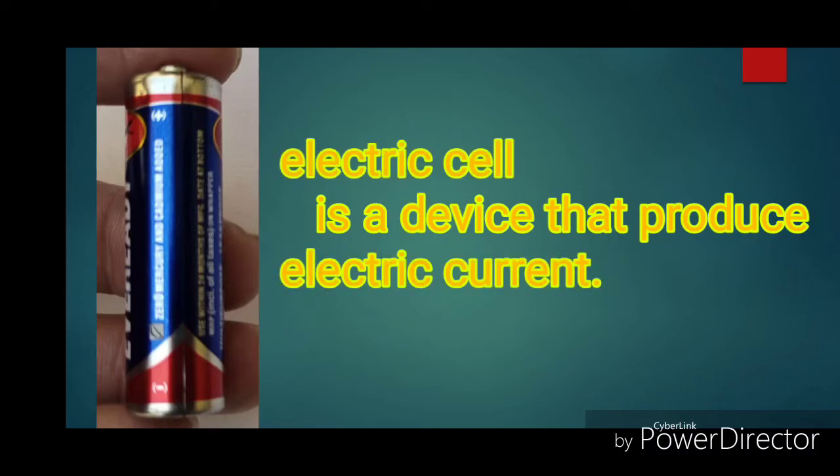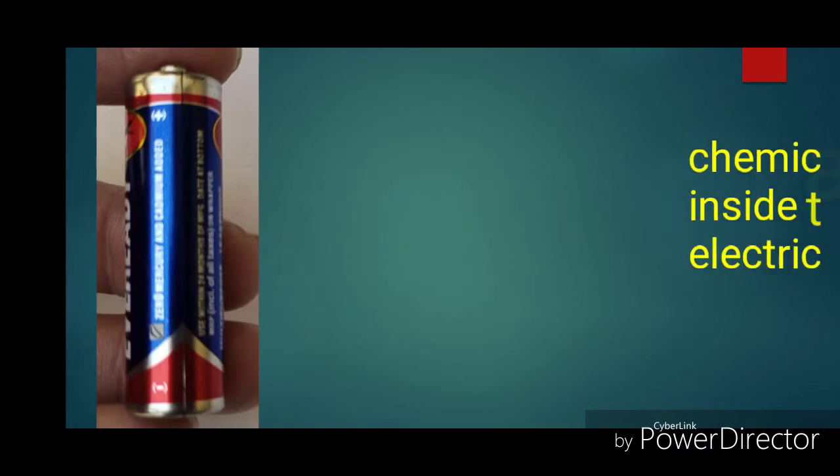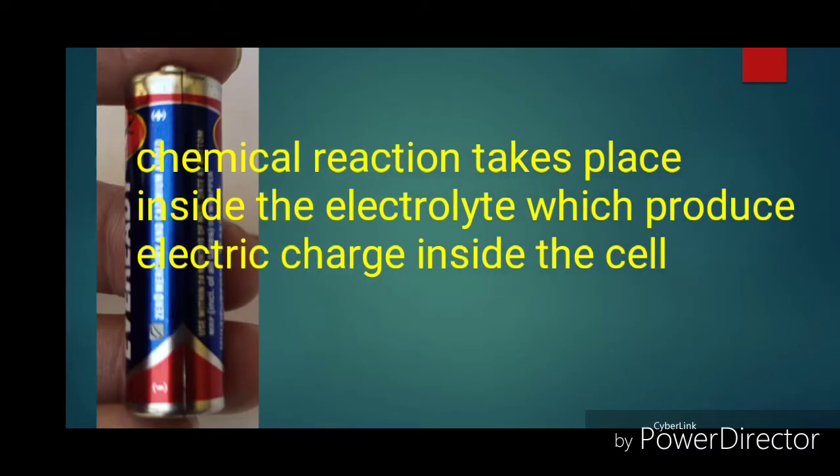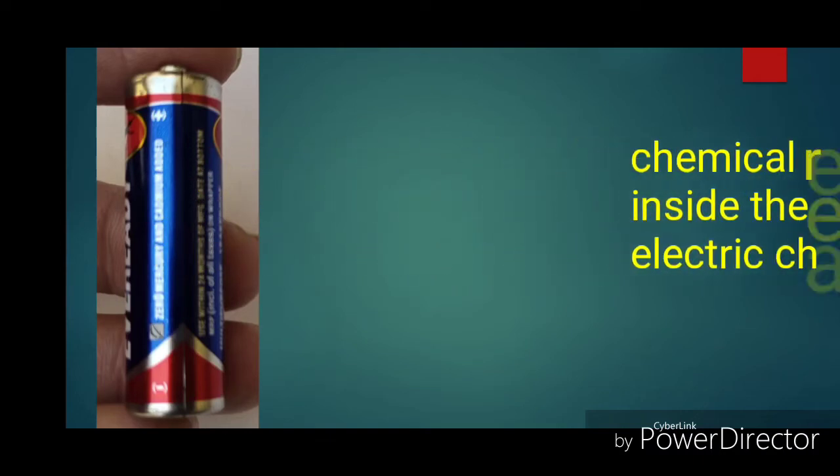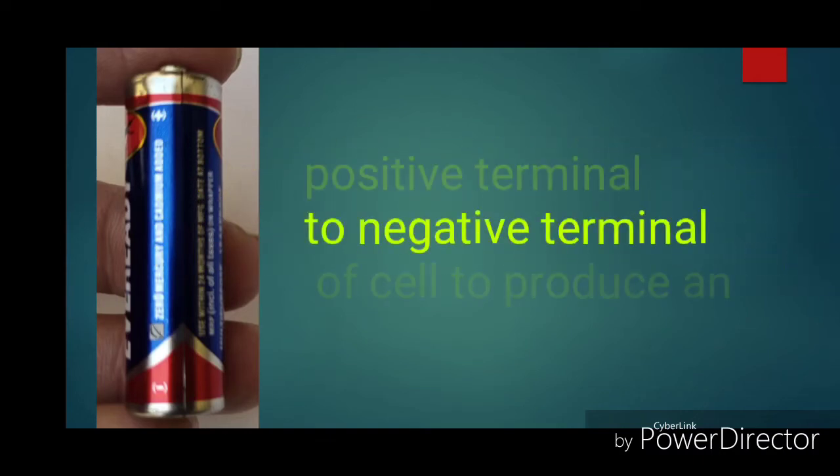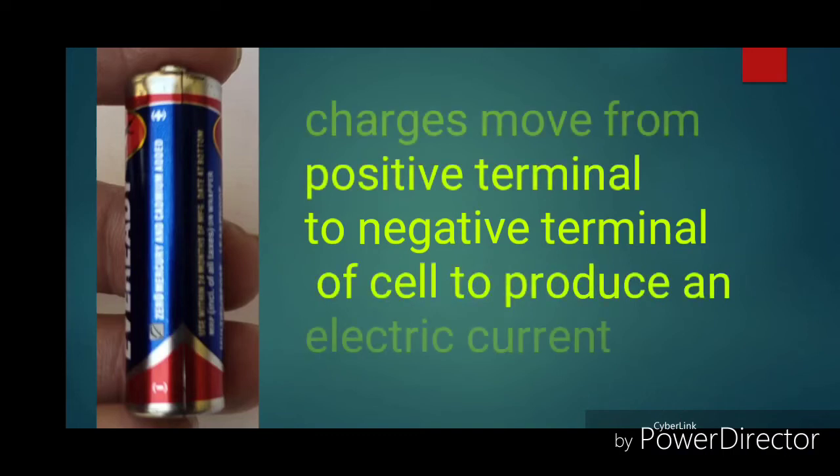A chemical reaction takes place inside the electrolyte which produces electric charges inside the cell. The charges move from the positive terminal to the negative terminal of the cell to produce electric current.